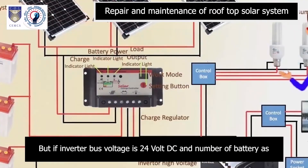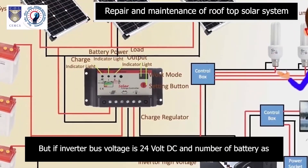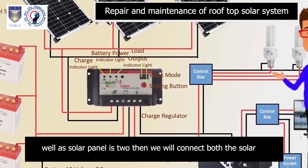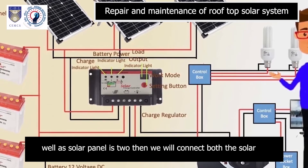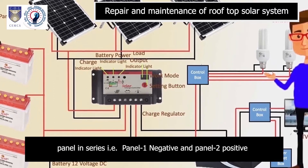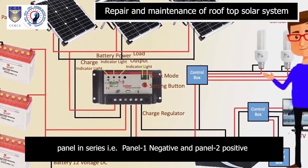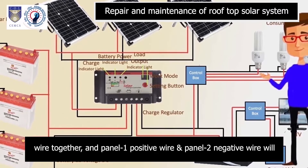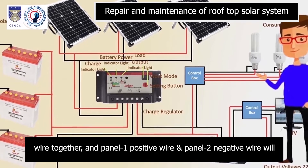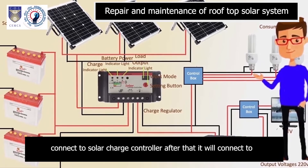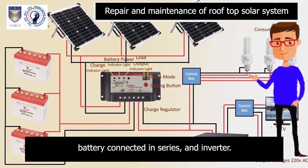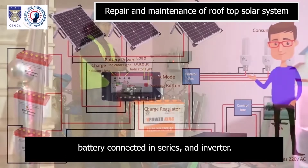But if the inverter bus voltage is 24V DC and the number of batteries as well as solar panels is two, then we will connect both solar panels in series — that is, panel 1 negative and panel 2 positive wires together — and panel 1 positive wire and panel 2 negative wire will connect to the solar charge controller. After that, it will connect to the batteries connected in series and the inverter.